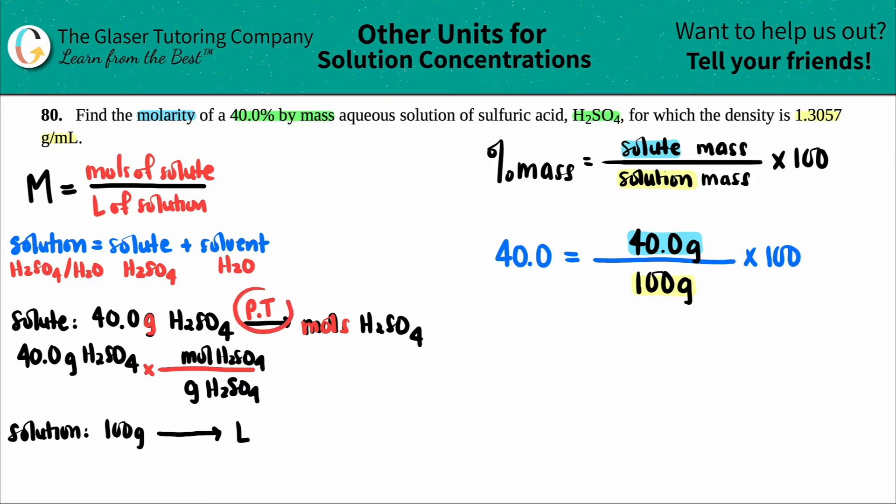If you're using the periodic table, wherever the word mole is, you put one. The mass on the periodic table goes where the grams are. We've got to find the mass of H2SO4. You've got two hydrogens, one sulfur, and four oxygens. Two hydrogens, add that to one sulfur which is 32, add that to four oxygens, each oxygen is 16. I get 98.076.